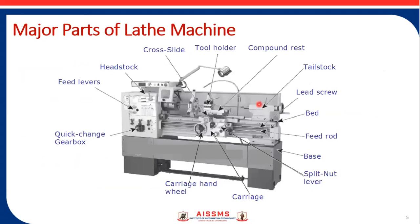These are the major parts of lathe machine. This is the headstock. This one is the tailstock. This one is the bed. Then this is the carriage. This one is the cross slide. This one is the tool holder. This one is the compound rest. Let's see the construction of lathe machine in detail.